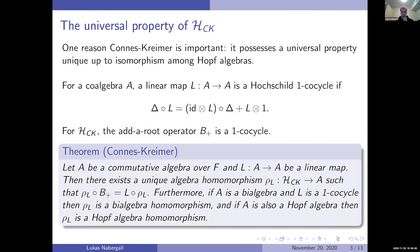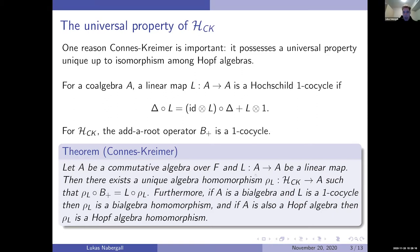The universal property, proved by Connes-Kreimer: given a commutative algebra A over a field F and some linear map from A to itself, there exists a unique algebra homomorphism from Connes-Kreimer to A such that composing the homomorphism with B+ is the same as composing L with the homomorphism. So this homomorphism is essentially turning B+ into L.